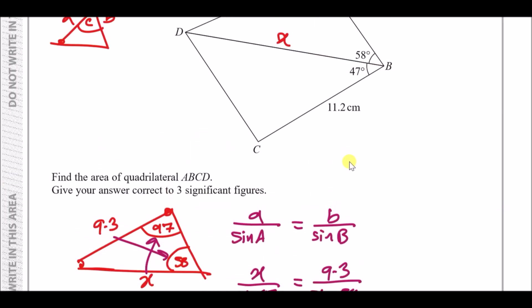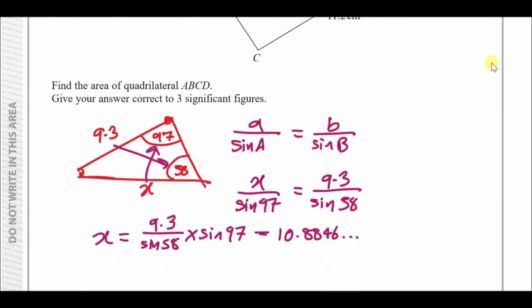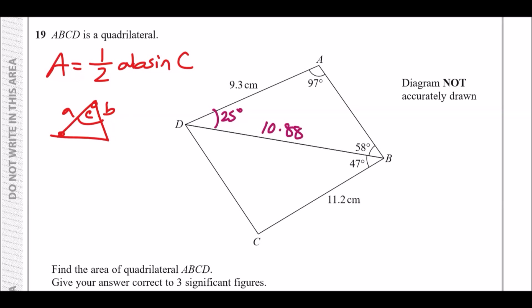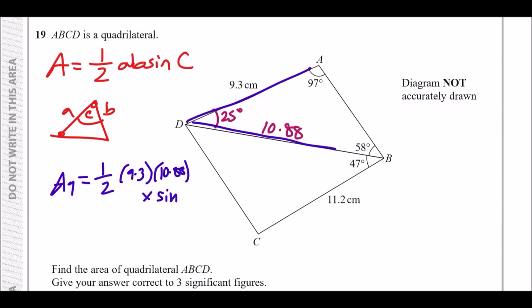With DB approximately 10.88, the third angle of the top triangle is 180 minus 97 minus 58 equals 25 degrees. Now we can find the area of the first triangle: area A1 equals half times 9.3 times 10.88 times sine 25, which gives approximately 21.38 centimetres squared.